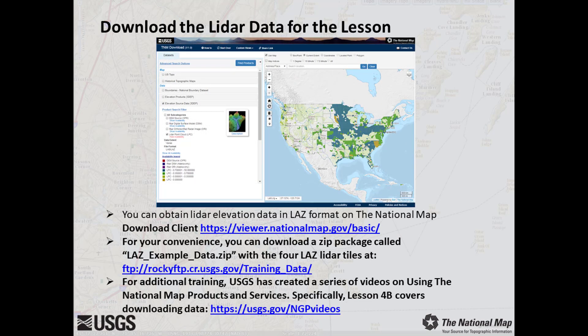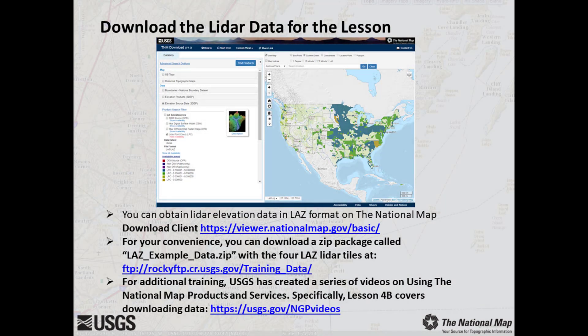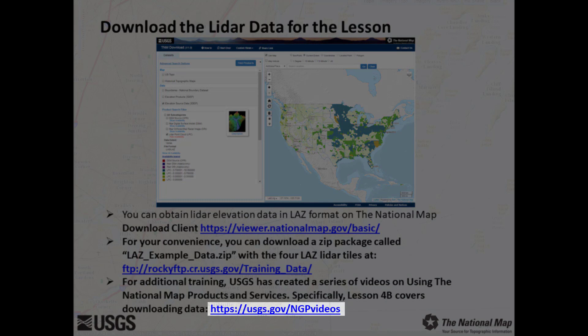Before we begin, you'll want to download some LIDAR data to use during our exercise. The National Map has a download client where you can find USGS products to include elevation data, such as LIDAR point clouds, at viewer.nationalmap.gov/basic. If you are interested in learning more about downloading products from the National Map, be sure to check out our training videos located at www.usgs.gov/ngp-videos.